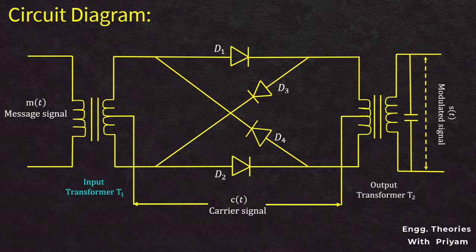The diodes serve as switches that control whether the input modulating signal is passed with or without 180-degree phase reversal. For the modulator to operate, the carrier signal amplitude must be adequately greater than the modulating signal — about six or seven times greater — and the frequency of the carrier signal must be higher than the frequency of the modulating signal. The carrier signal controls the on-off condition of the diodes.